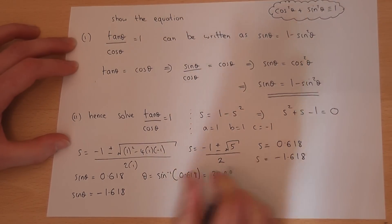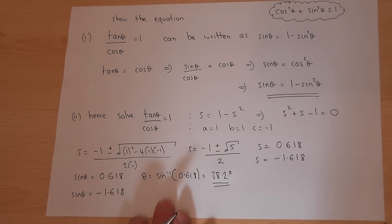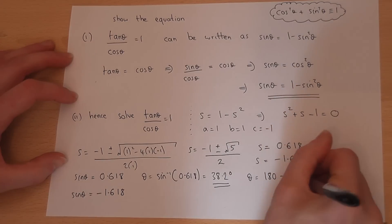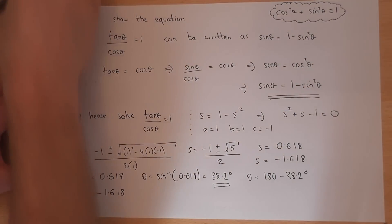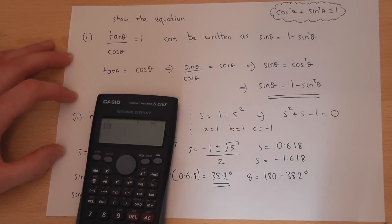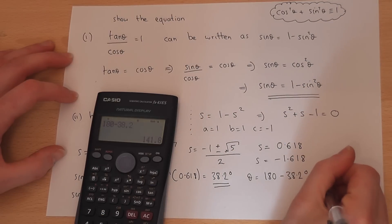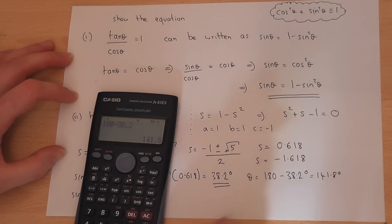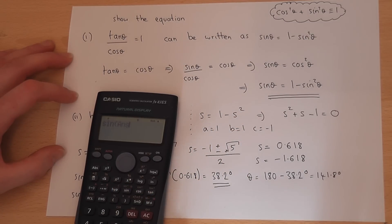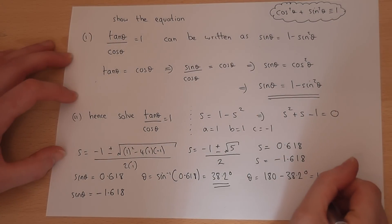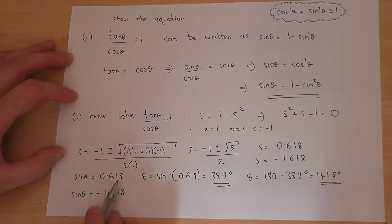That is one solution. However, there are two solutions for any given sine value. To find the other solution, the rule is to do 180 minus your other angle. So 180 minus 38.2 is 141.8. And just to verify this, if I do sine of this angle, I do get 0.618. So they are my two angles from that part of the equation.